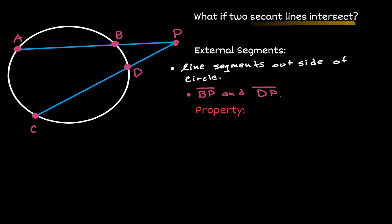When we have this scenario, there's a property that will always occur. Let's assign some names to those line segments. Line segment BP, let's call it S. Line segment DP, let's call it U.